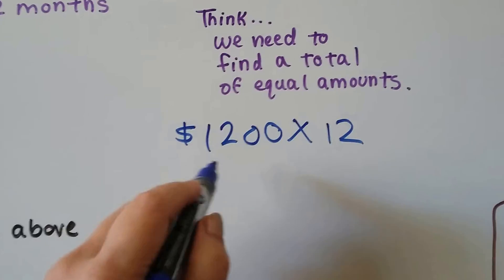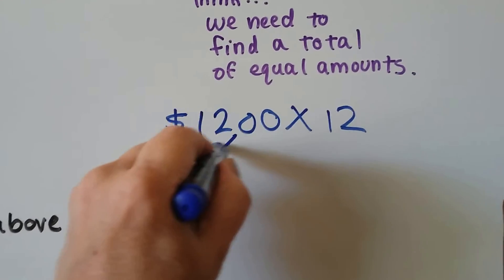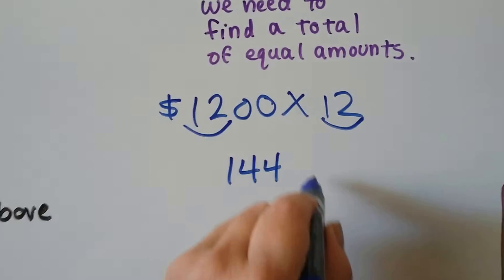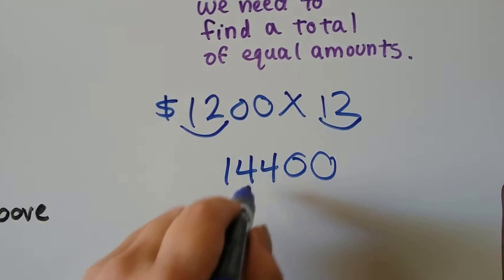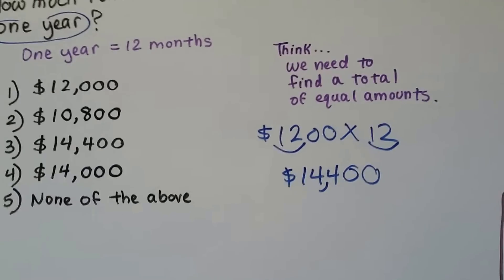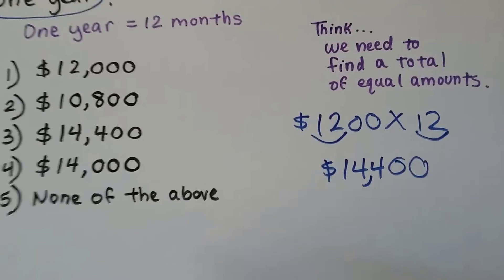We can actually do this quickly and do 12 times 12, which is 144, and then add the two zeros at the end. By the time we put the commas in and the dollar sign, we can see the correct answer is C.